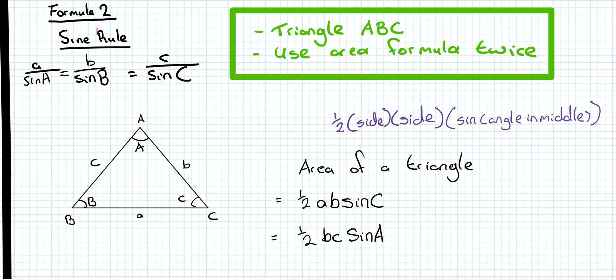So in this video we'll be looking at the proof of formula 2 or trig identity 2, which is the sine rule, which states A over sine A is equal to B over sine B which is equal to C over sine C.